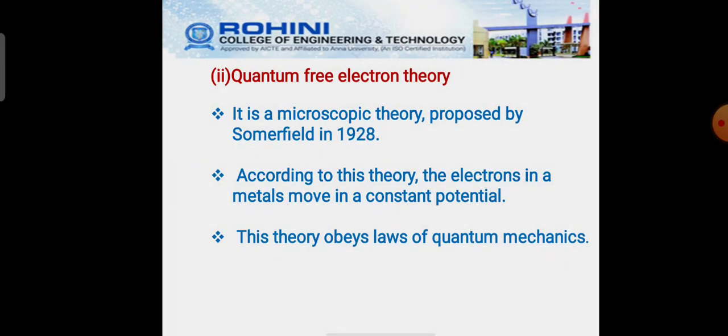Next theory is quantum free electron theory. It is a microscopic theory that was proposed by Sommerfeld in the year 1928. According to this theory, the electrons in the metals move in a constant potential. This theory obeys laws of quantum mechanics.